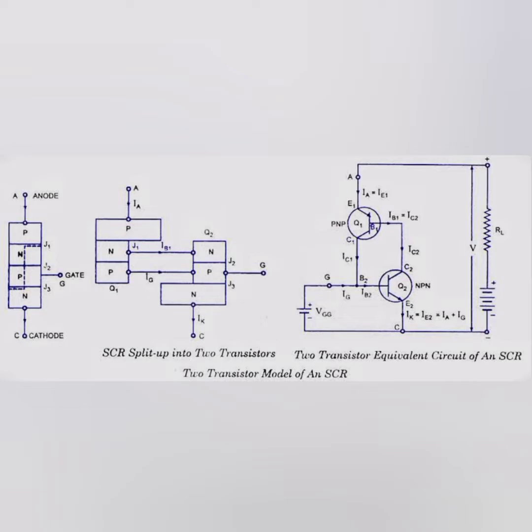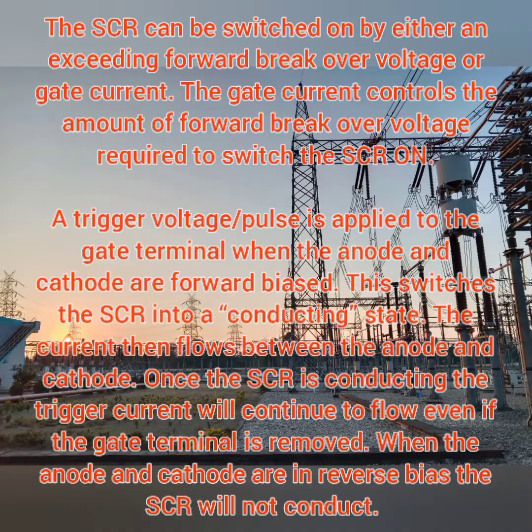This is the diagram of the SCR. It has a P-N and then another set of P-N, which forms the SCR model. The anode is the positive terminal, the cathode is the negative terminal, and the gate is the controlling point. In between, the first P-N forms junction layer J1, and the second P-N forms junction layer J2.